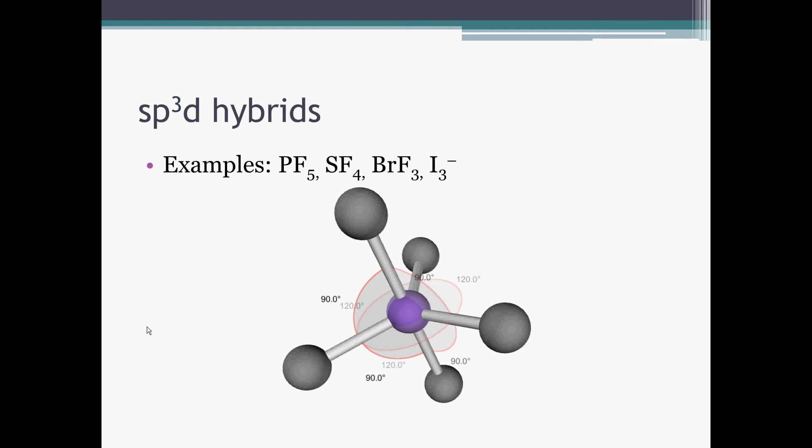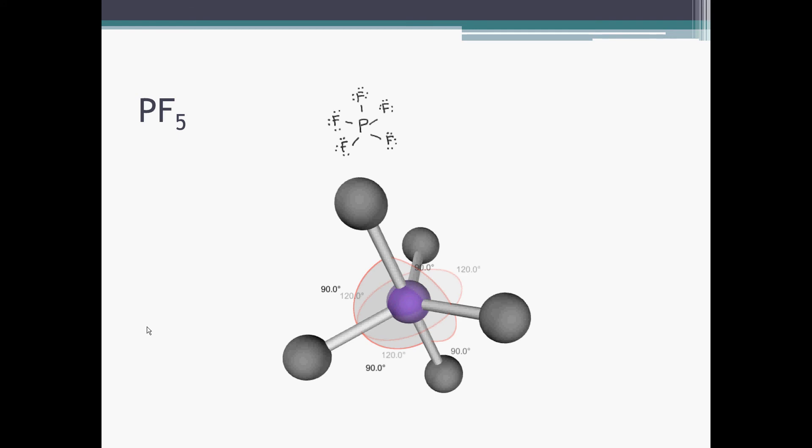So if we add a fifth electron domain, the SP3D hybrids. If we look at PF5, five domains, all involved in bonds. And we see this in-plane 120 degree shape that looks a lot like the trigonal planar, and the two out of plane bonds at 90 degrees to the plane.